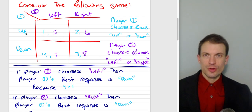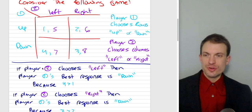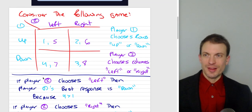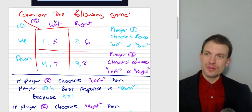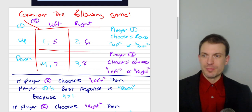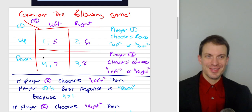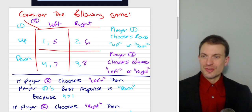I've got two players. Player one is controlling rows — up and down. Player two is controlling columns — left and right. Notice the colors. If player two chooses left, what's player one's best response? Suppose player two has chosen left. Player one gets a payoff of one by choosing up, or a payoff of four by choosing down. The first number is the payoff to player one, color-coded; the second number is the payoff to player two. So if player two uses left, player one can either get four or one — they want four, so they choose down.